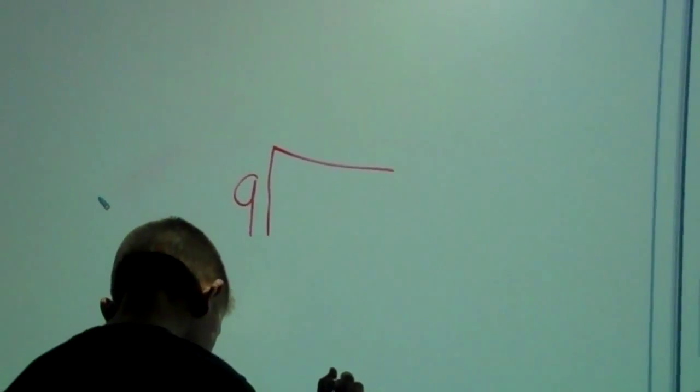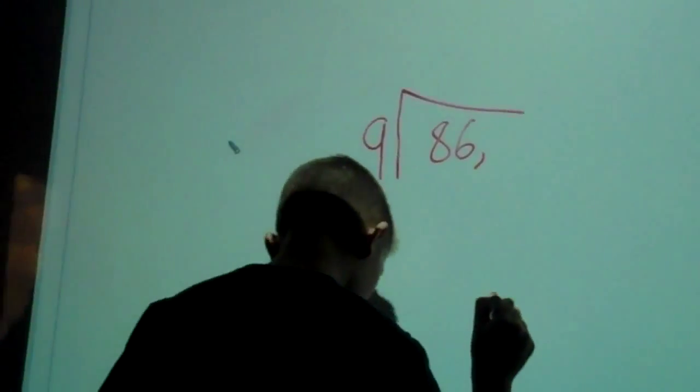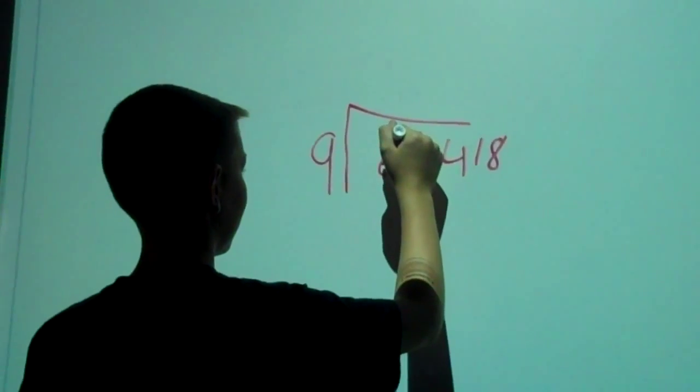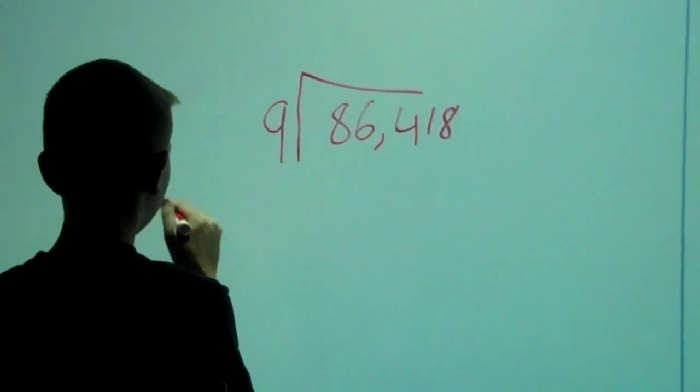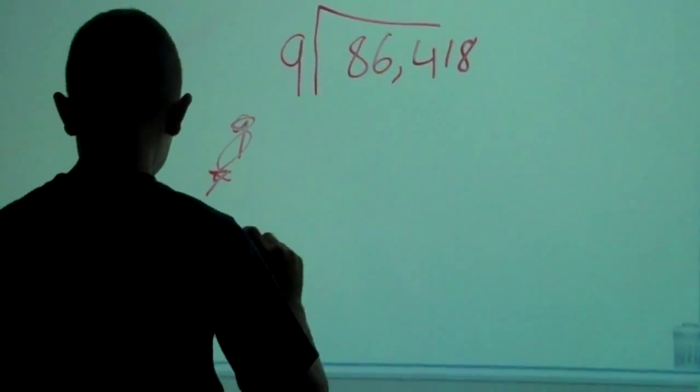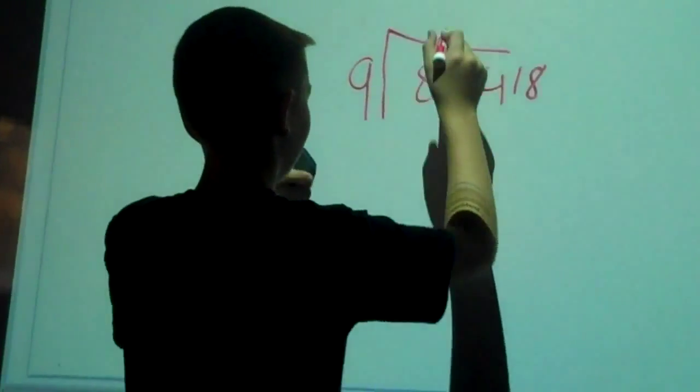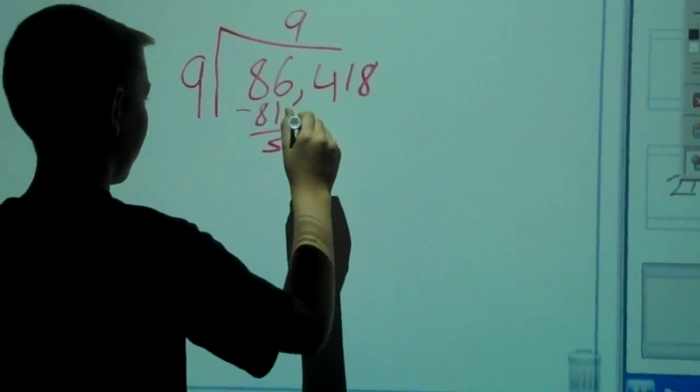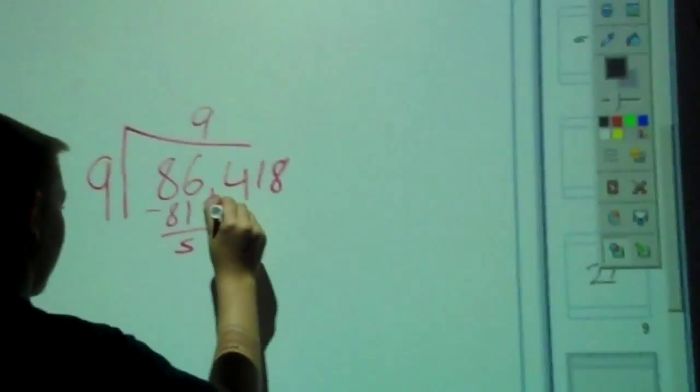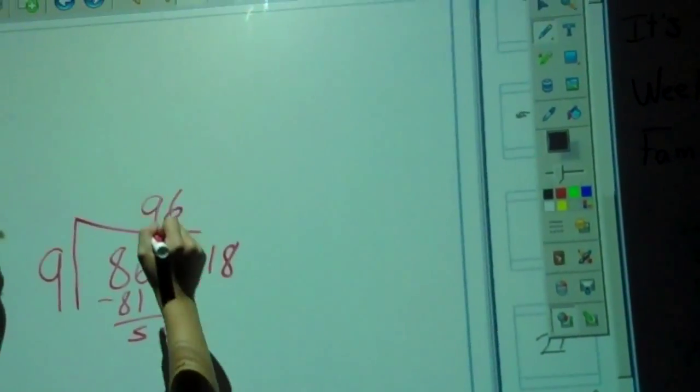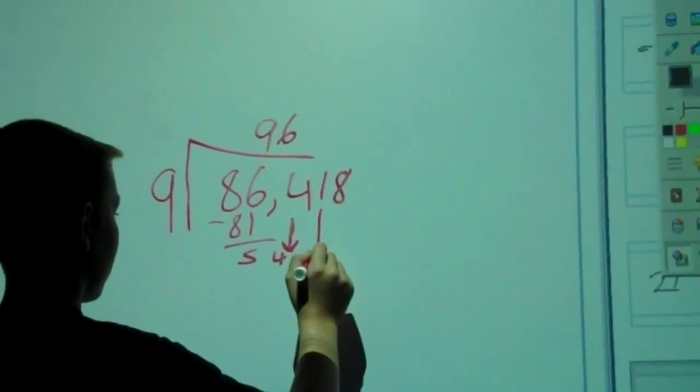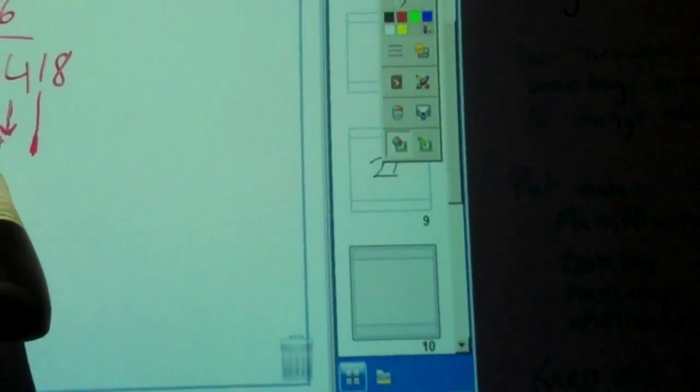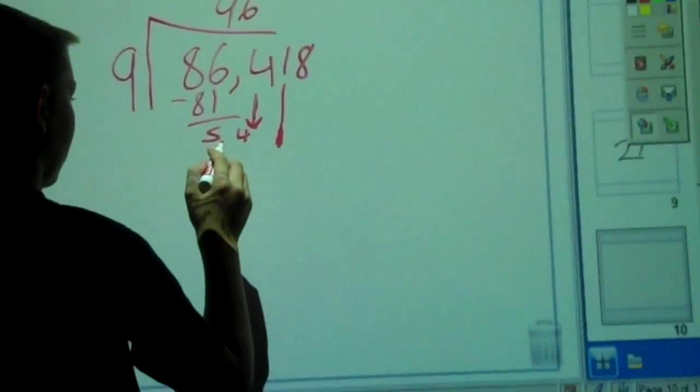Now we're going to do an even harder problem. So how many times does 9 go into 86? 9 goes into it 9 times. 9 times 9 is 81, and then 86 minus 81 would be 5. And then you bring down your 4, 9 goes into 54 six times, and then you take 54 minus 54, which equals 0.